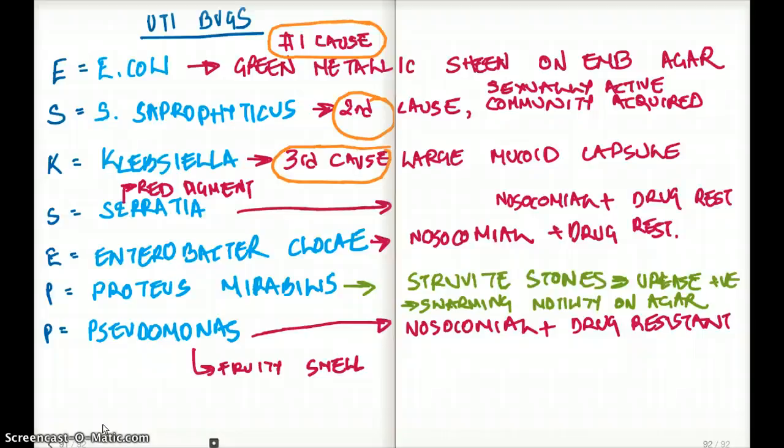Followed by, second most common is Staph saprophyticus, which causes UTI in sexually active women, but they get it by community. It's community acquired.